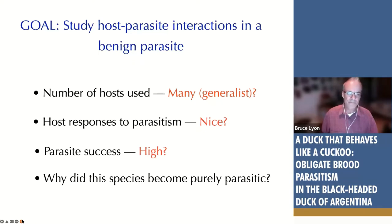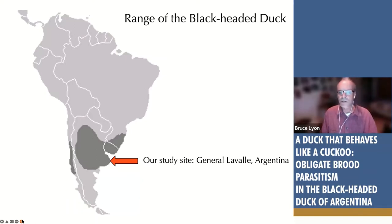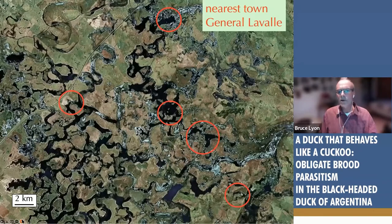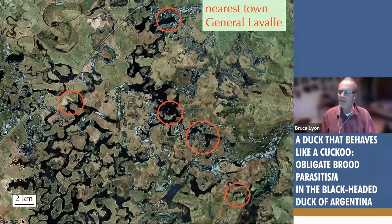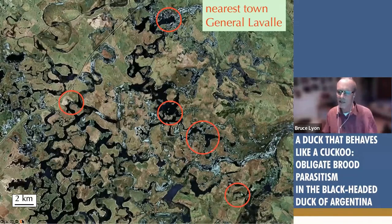Our study site is right in the corner of Argentina, not too far from Buenos Aires, near a small town called General Lavalle. The shaded area on the map shows where in South America the black-headed duck breeds. The area is like the Everglades — very flat, with lots of mosaic of grasslands and wetlands packed with birds. We had five different study wetlands where we surveyed for hosts and looked for eggs.